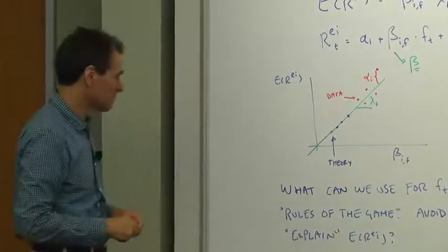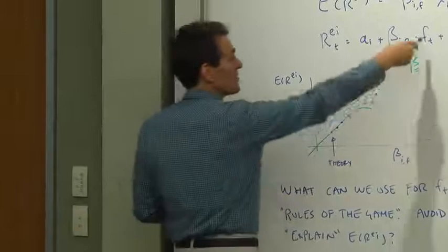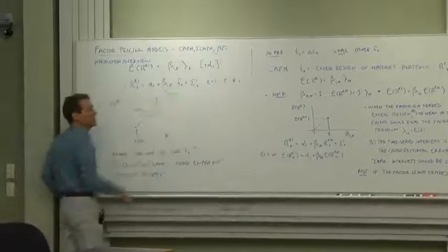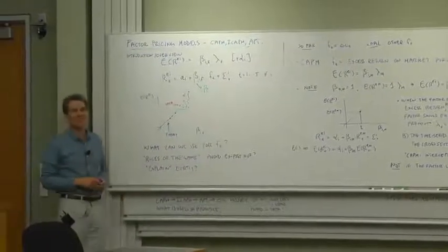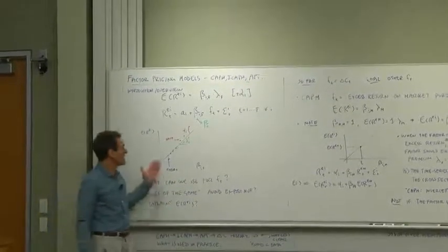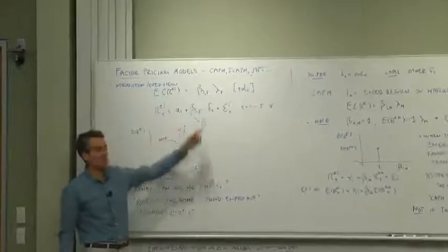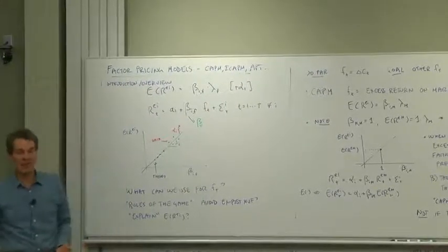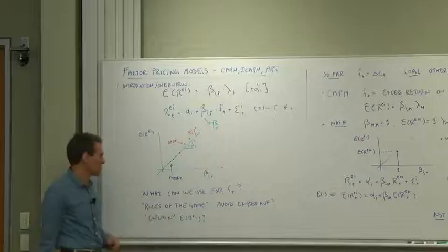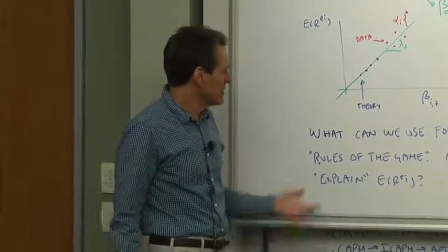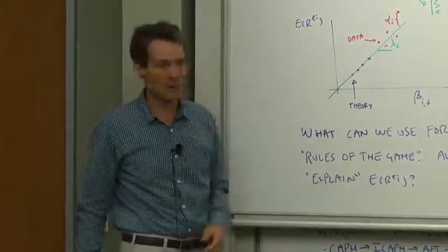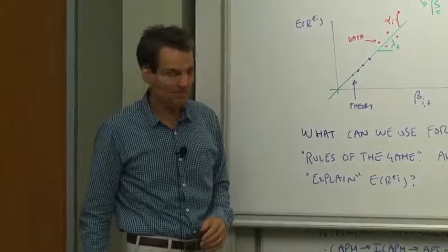For a general factor F, the question is what can we use for factors? What can we put on the right-hand side of an expected return beta model? What are the rules of the game? How do we avoid finding an ex post mean-variance efficient portfolio? This is guaranteed success if we choose as the factor the ex post mean-variance efficient portfolio. We need some rules of the game to keep ourselves from finding something like that which won't work out of sample and doesn't explain anything. What does it mean deeply to say we have explained expected returns by such a factor model?